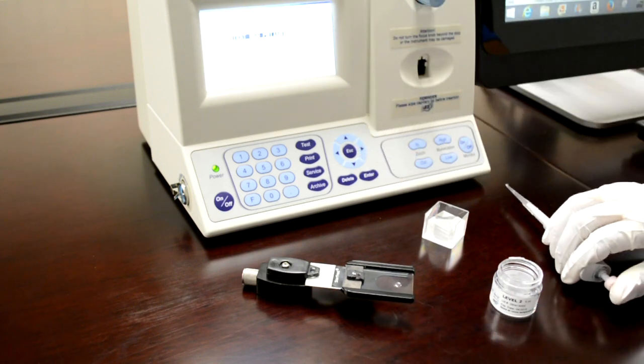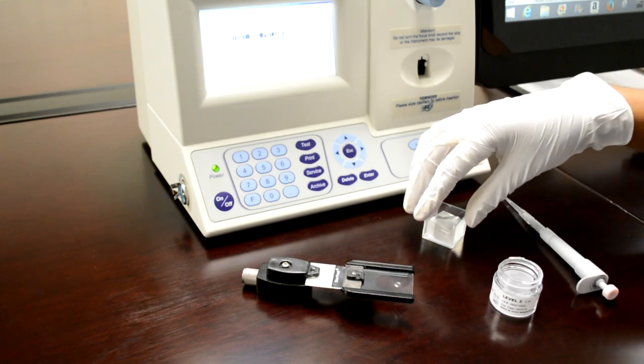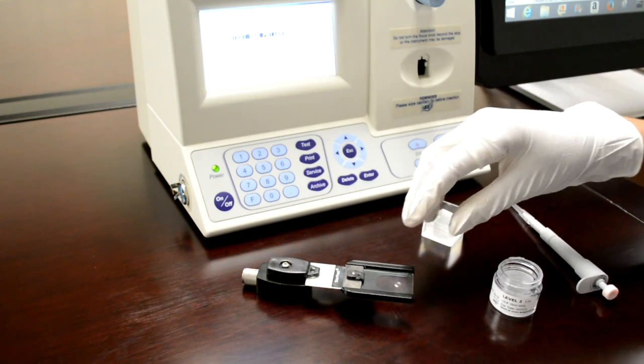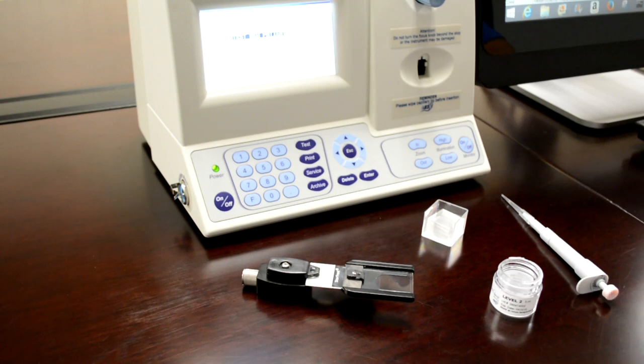Now, place a 22 by 22 millimeter cover slip over the drop. Allow to sit for about one minute to let the sample stabilize.